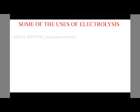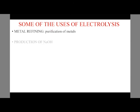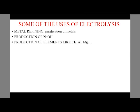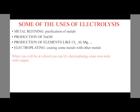Some of the uses of electrolysis are metal refining, which means metal purification, production of sodium hydroxide, production of elements like chlorine, aluminum and magnesium, and electroplating. Electroplating means coating some metals with other metals.